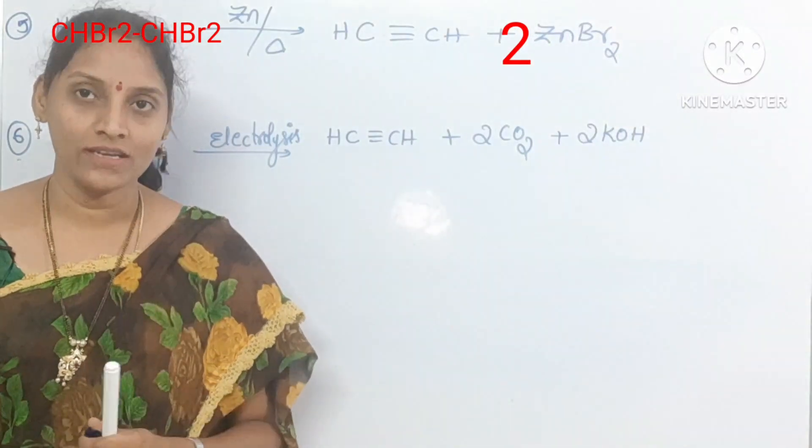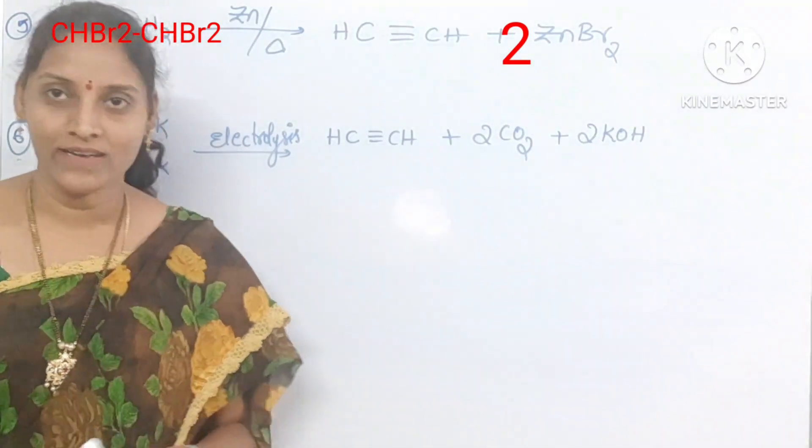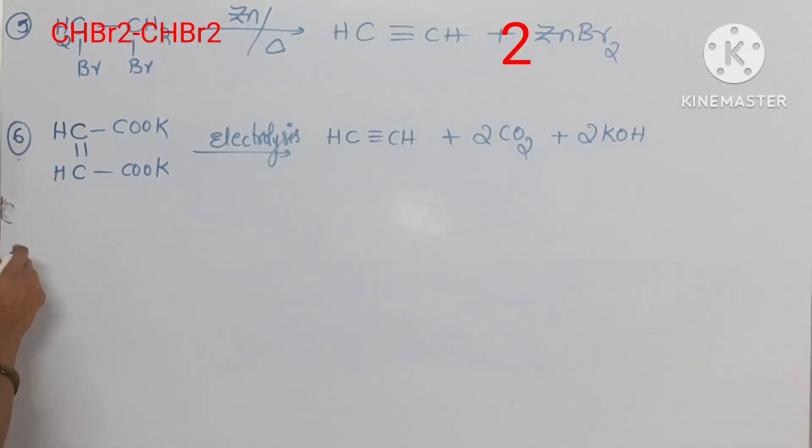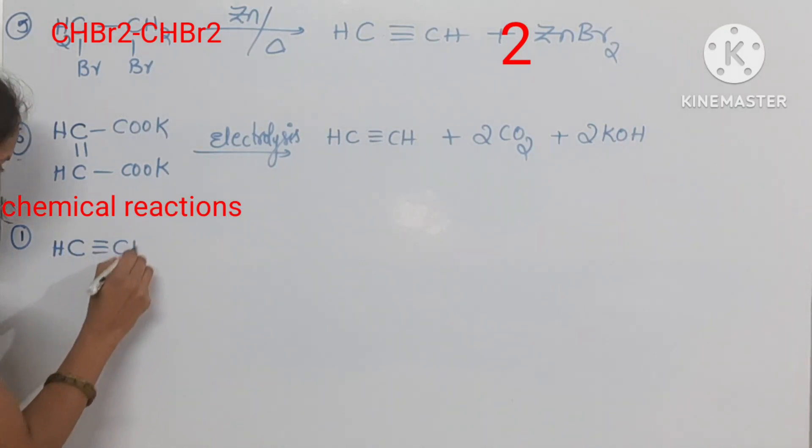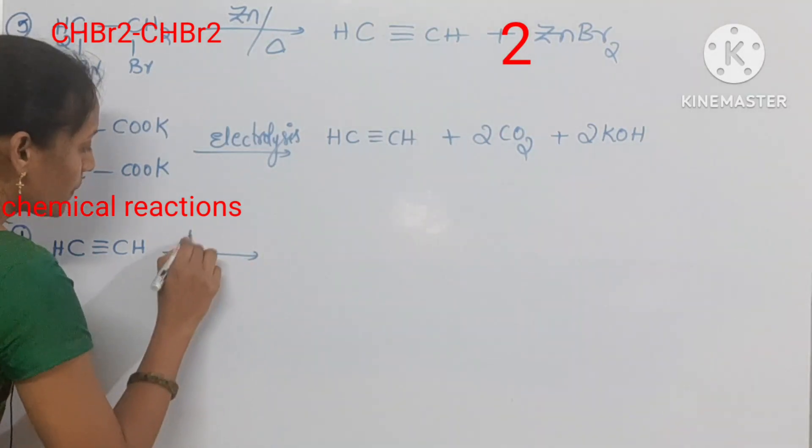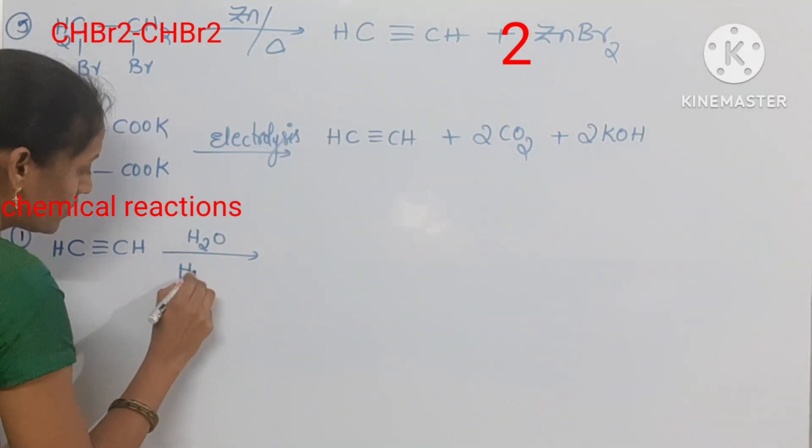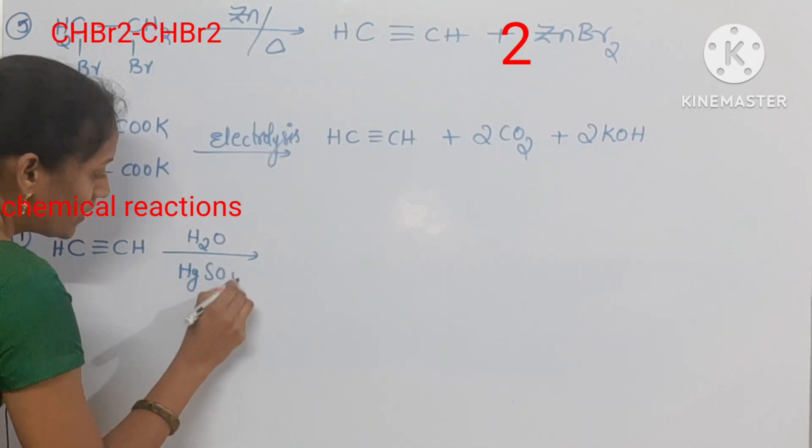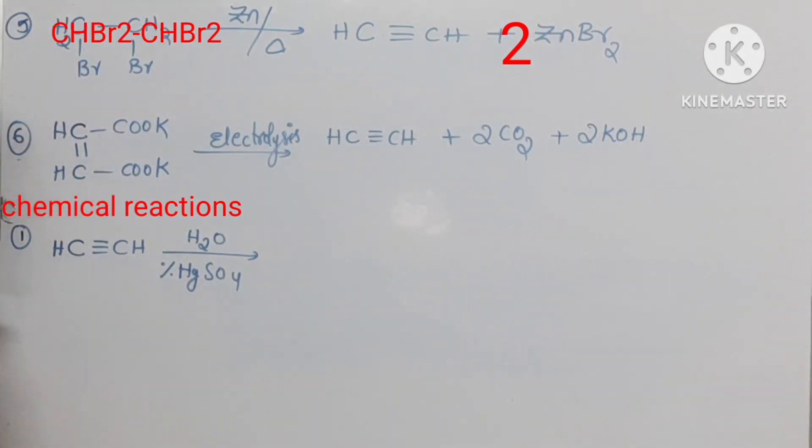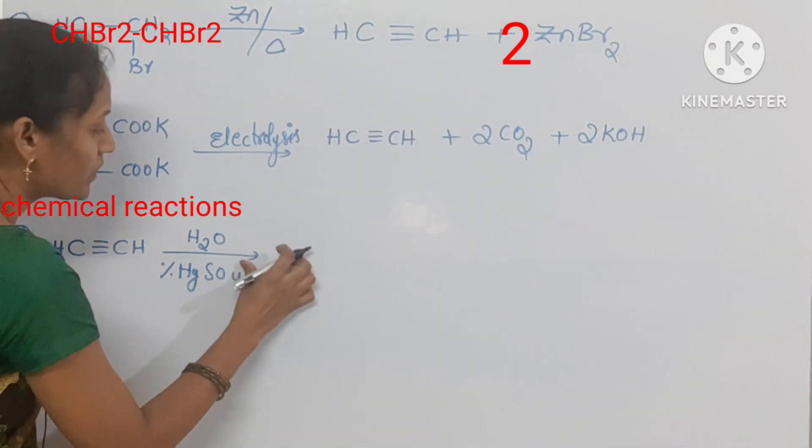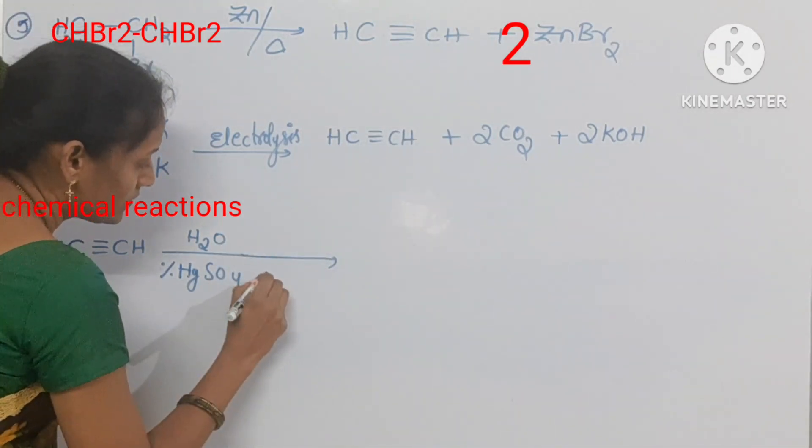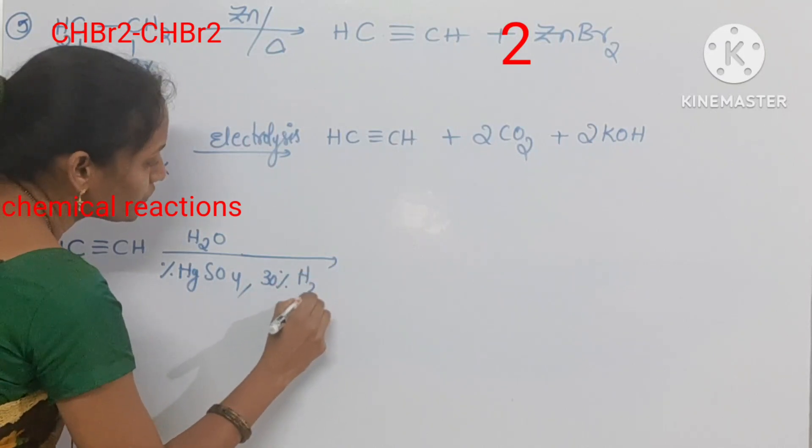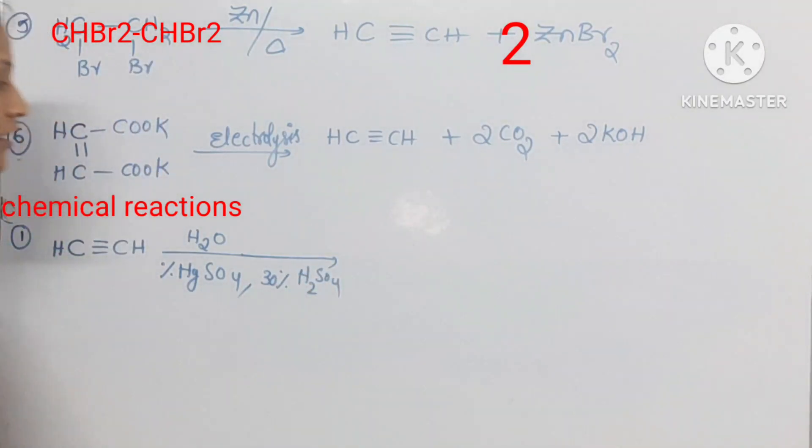And then after we can see chemical reactions of acetylene. Chemical reactions, first one. Acetylene reacting with water in presence of HgSO4. Here students HgSO4 is 1%, another one is 30% H2SO4 also needed, 30% H2SO4 and heating.